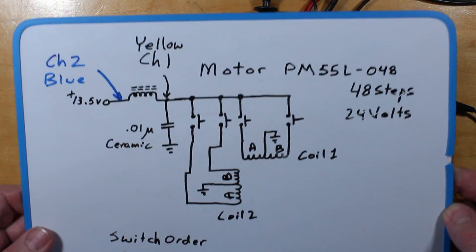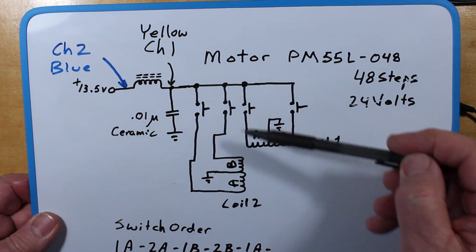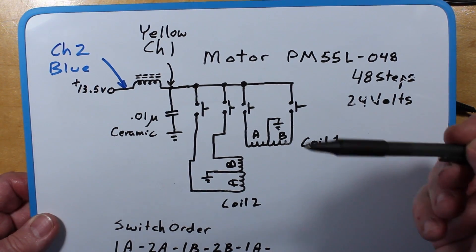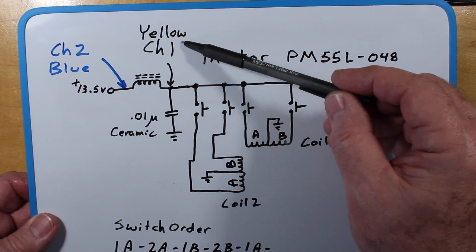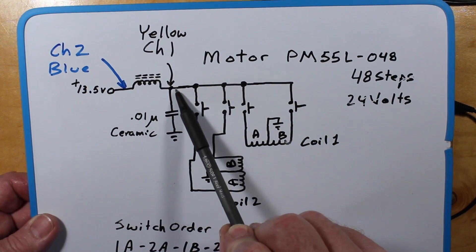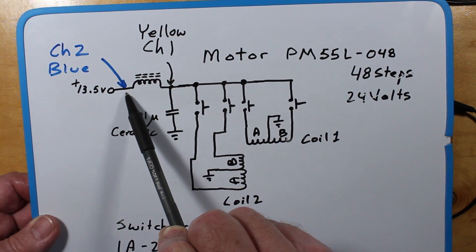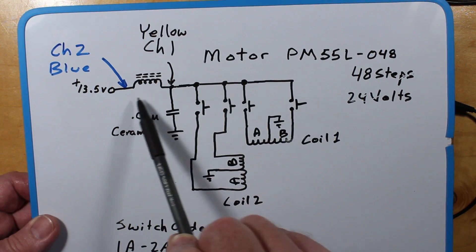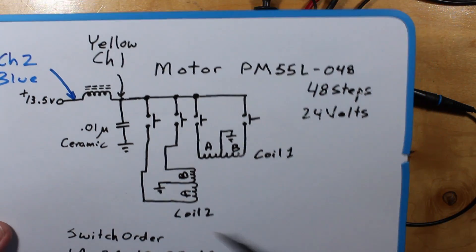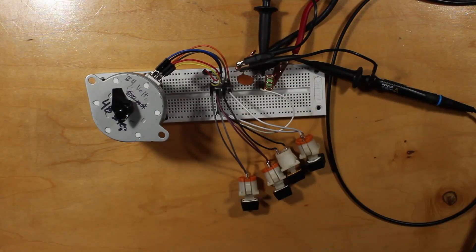So now we're going to take a look at the inductive kickback that happens when you de-energize a coil by letting one of these buttons go after it's been energized. We have on the scope channel 1 is the yellow trace which is taken from this point here and we have channel 2 the blue trace which is taken from the other side of this toroid. So let's push a button. It doesn't make any difference which button it is because all the coils are the same and all the buttons are the same.